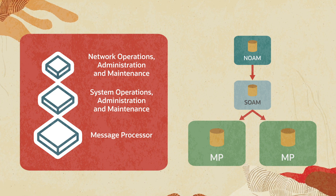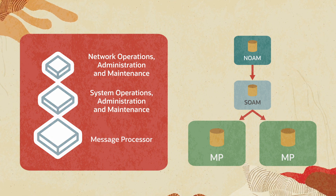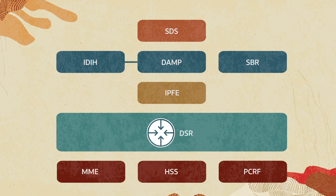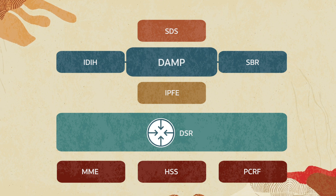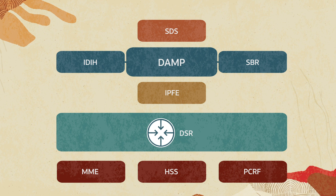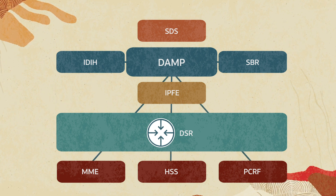MPs are the source of DSR measurements and alarms data. DSR uses the following network elements as part of its core functionality to process and manage diameter messages. Diameter Agent Message Processor, or DAMP, processes diameter messages and establishes connection with peers and frontends.